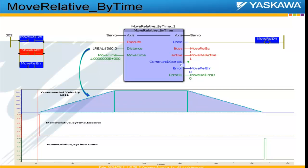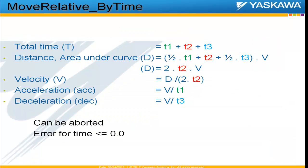The time given is split into three equal parts to create a trapezoidal velocity profile for the axis. The area under that trapezoidal profile equals the distance that the axis moves. This function block contains an MC Move Relative inside it.